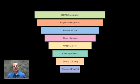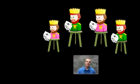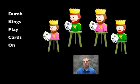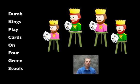You're going to need to know this for the test. You're wondering, how am I going to remember this? Let's take a look at this. What is this picture? This is my fun little picture of a bunch of kings playing cards. So you say, what does that have to do with anything? Well, take a look over to the left. We have dumb kings play cards on four green stools. We have D, domain, K, kingdom, phylum, class, order, family, genus, and species.